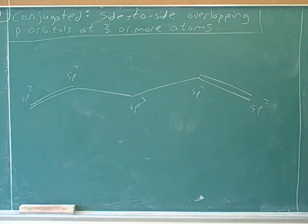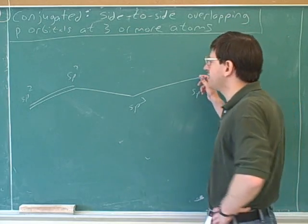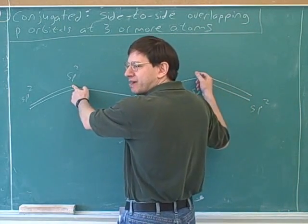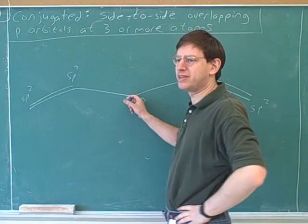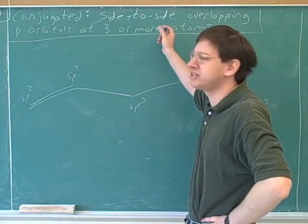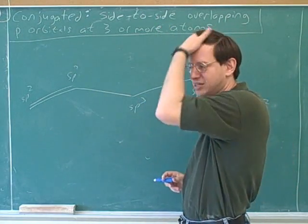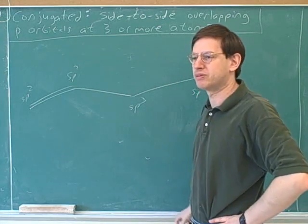It's important to see the difference between this and the previous example. Why not? Because the p orbital over here is not close enough to this atom to overlap with it. They're separated by this atom over here. So maybe I should have included this idea of three or more adjacent atoms. Unless the atoms are adjacent, you can't really have overlap between them.